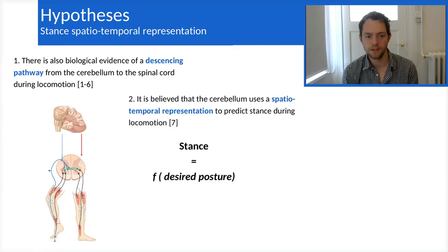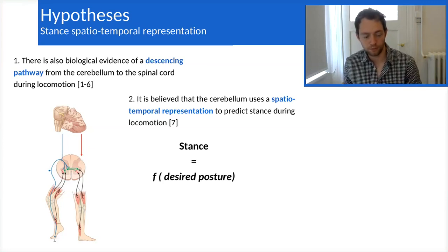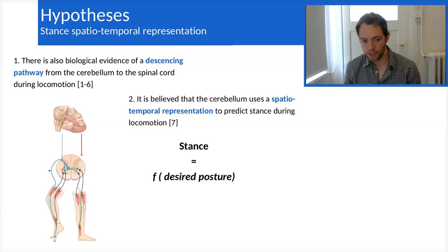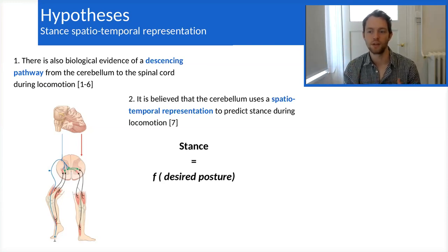The second hypothesis, which is the crucial hypothesis in this work, is the belief that there is spatiotemporal representation in the cerebellum to predict the stance and posture during locomotion. So in a way, it's not relying on sensory feedback coming from the lower limb, but from a higher level signal from the brain saying the posture during locomotion should be like this or that as desired.